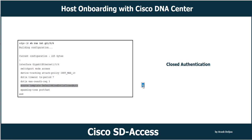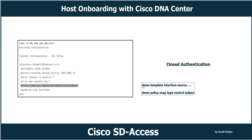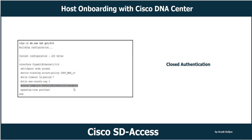The interface-level configuration for closed and open authentication looks similar, but the difference lies within the service template inside 'DefaultWired_dot1x_closedAuth'. You can view it with the command 'show template interface source DefaultWired_dot1x_closedAuth'. To view the policy map, use 'show policy-map type control subscriber' followed by the policy name. Cisco DNA Center configures the same 'source template' command on the port, but the template itself is different for closed versus open authentication.